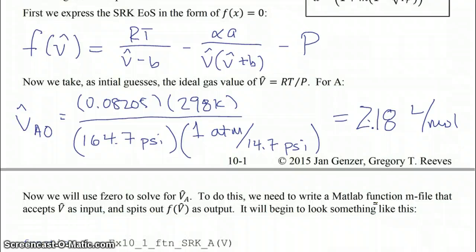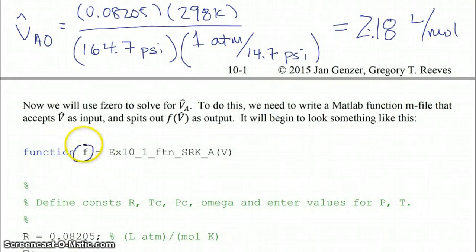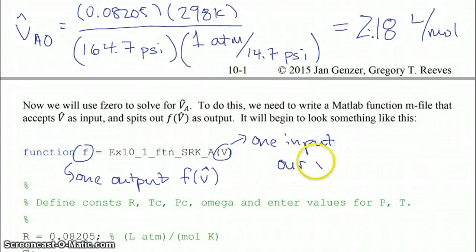Now we're going to use fzero to solve for V̂_A. To do this first we have to write a MATLAB function m-file that accepts V̂ as input and spits out f(V̂) as output. So the function will begin to look something like this where you have your function f where this here is our one output. It's a scalar and it is going to correspond to f(V̂). You have your file name in this case shown here. This is the file that we're actually going to save onto our computer. And then you have only one input, and that is our variable that we're trying to solve for in this case V̂.